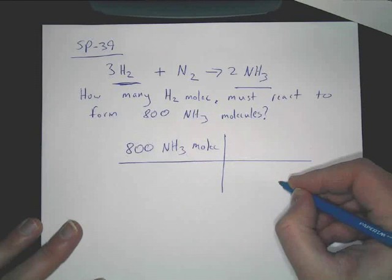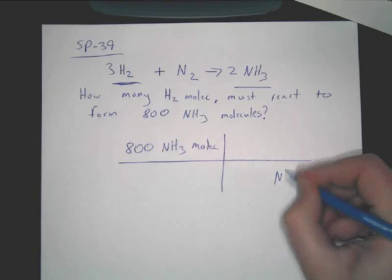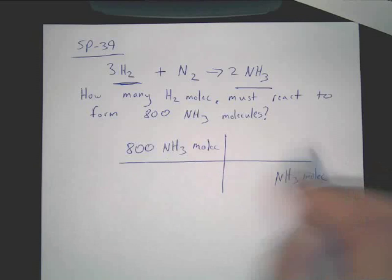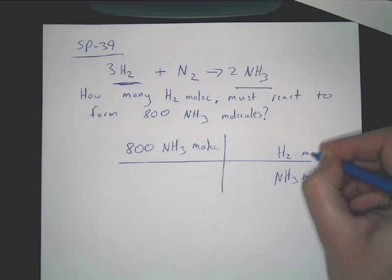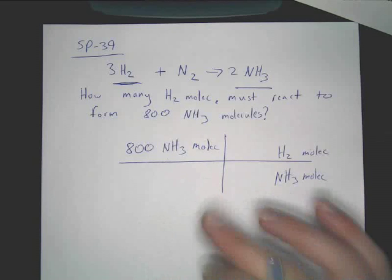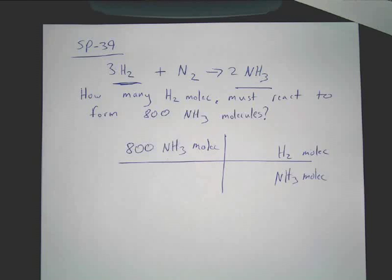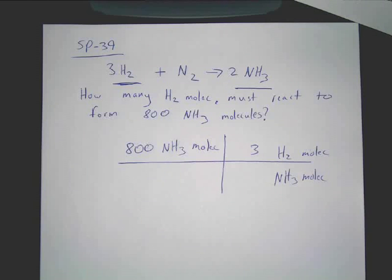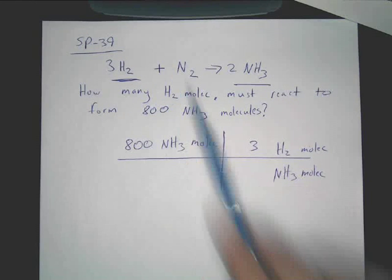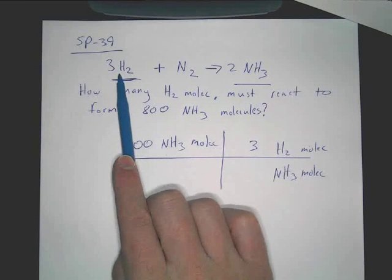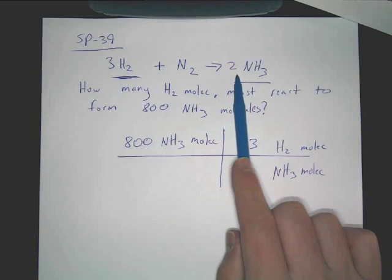Now what must go down here? What unit must be down here in this one? We know that. Now what are we going to? It wants to know how many molecules of H2. So you write down molecules of H2. Now where you're going to get these numbers from is actually really simple. You're just simply using the coefficients, because that's the ratio of H2 to NH3 in this reaction. So what is hydrogen's coefficient? Three. So you put a three there.